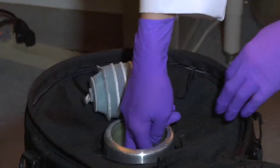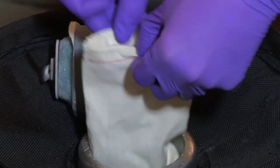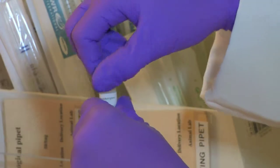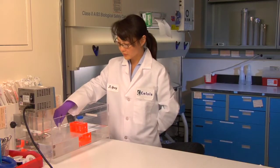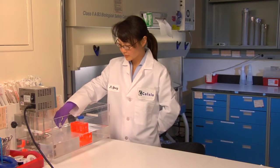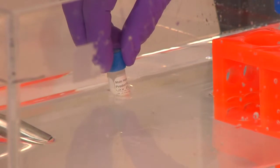Take one vial of human cryoplateable hepatocytes from your dewar and gently unscrew the cap partially to release the pressure and then reseal. Hold the vial by the cap in the water bath. It will take approximately two minutes at 37 degrees Celsius to thaw the vial of hepatocytes.